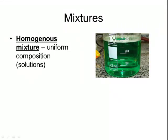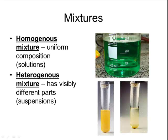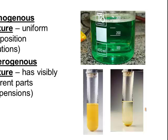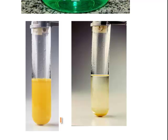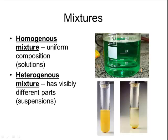A mixture also comes in two different types. You can have a homogeneous mixture, which is uniform in composition — these would be things like solutions. Up on the screen I have a picture of a nice green solution. The other kind of mixture is called a heterogeneous mixture, and those have visibly different parts. An example is a suspension. Here I have a test tube filled with a yellow liquid, and if I spin it in a centrifuge, the heavy yellow powder sinks to the bottom and there's a clear solution on top — those are visibly different parts, so that is a heterogeneous mixture. If I put the solution in the centrifuge, nothing would change — it would look exactly the same, so that is a homogeneous mixture.